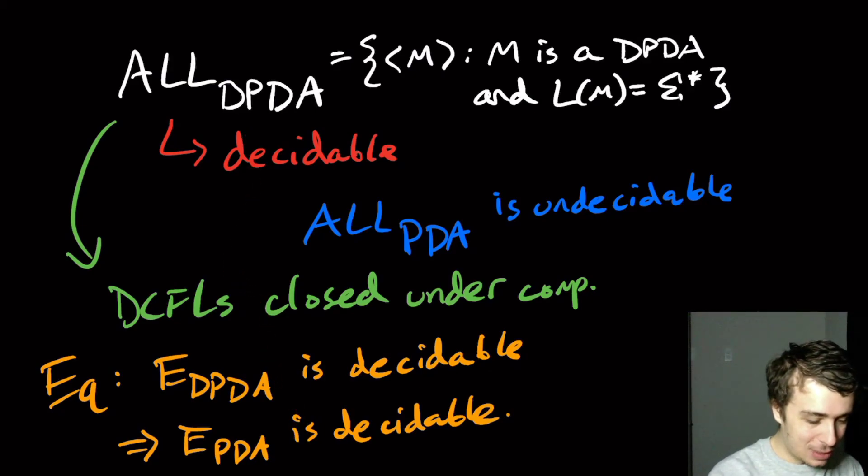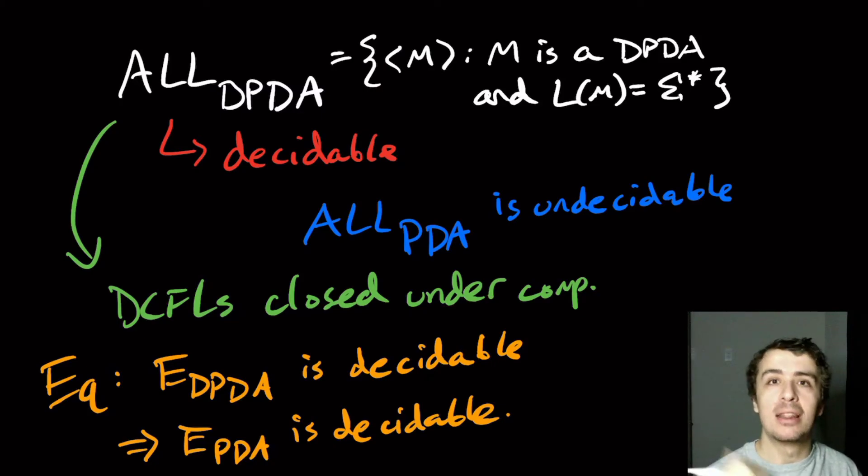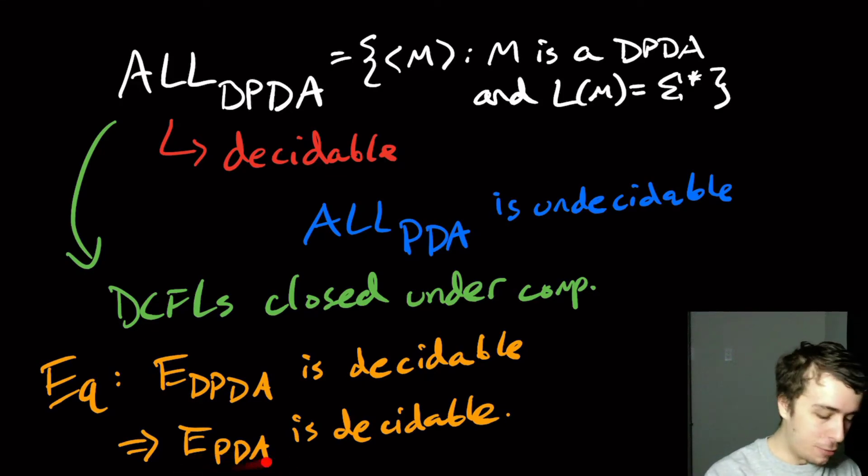So we can actually, so the idea is, because they're closed under complement, you can formulate the machine for the complement language, which is the empty set here. And so, therefore, you can answer it really easily.